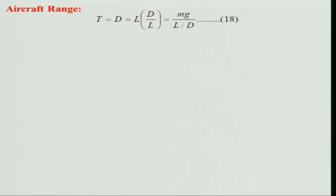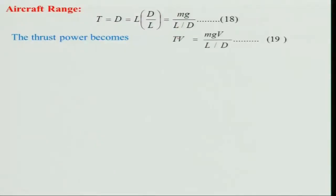So the thrust equals drag, and we can write T = D = L · (D/L). The lift in level flight is simply mg (mass of aircraft times gravity). Thrust power by definition is thrust times flight velocity: P_thrust = T · V = (mg · V) · (L/D).